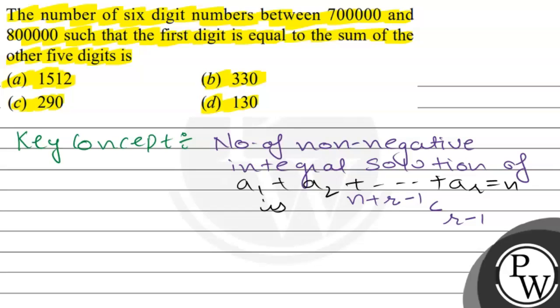How many six digit numbers between 7 lakhs and 8 lakhs? This means that the first digit is 7. The condition given is that the first digit equals the sum of the other 5 digits. So our first digit is 7.